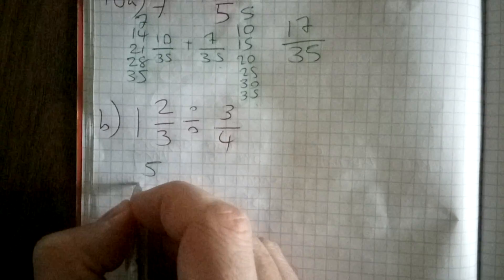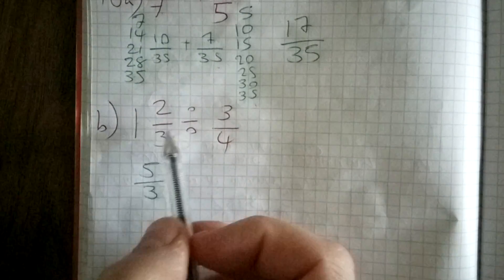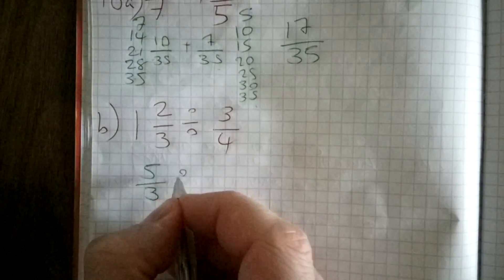The other way you can think about this is: this 1 is the same as 3/3, and 3 plus 2 is 5, so 5/3. Now I'm going to divide 5/3 by 3/4.